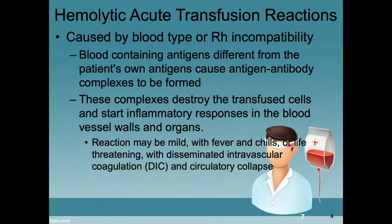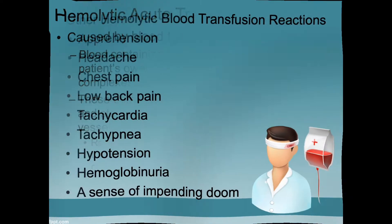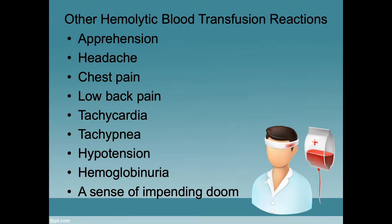Then there is the hemolytic acute transfusion reaction, caused by blood type or RH incompatibility. The blood containing antigens differently from the patient's own antigens causes an antigen-antibody complex to be formed. These complexes destroy the transfused cells and start inflammatory responses in the blood vessel walls and organs. The reaction may be mild, with fever and chills, or life-threatening, with disseminated intravascular coagulopathy and even circulatory collapse.